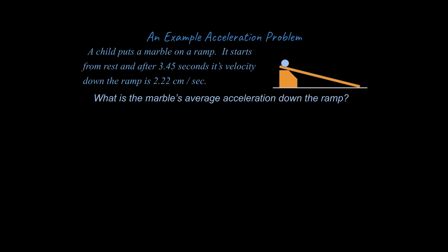Let's see how to do an example problem. I made up a problem here about a child that puts a marble on a ramp. The marble starts from rest and after 3.45 seconds, its velocity down the ramp is 2.22 centimeters per second. What is the marble's average acceleration down the ramp? So let's tackle this. First of all, you're going to want to assign an axis. You're going to want to make the forward direction positive, backwards direction negative.